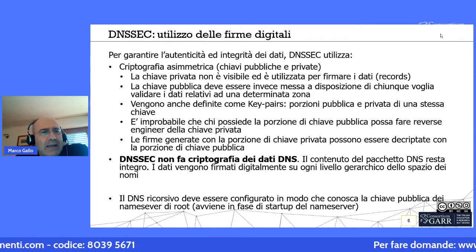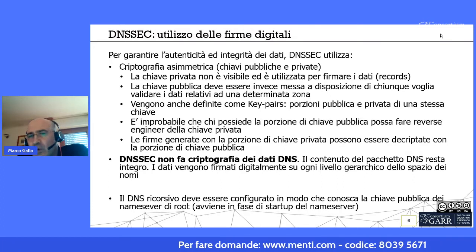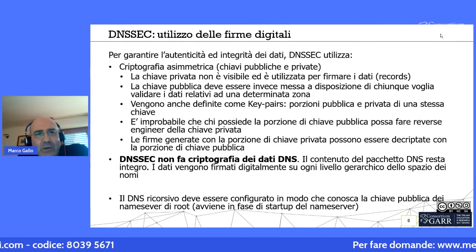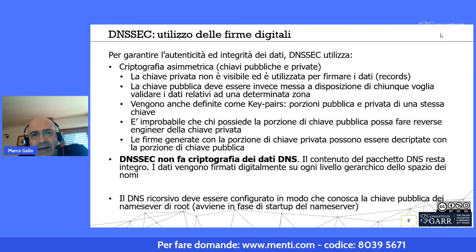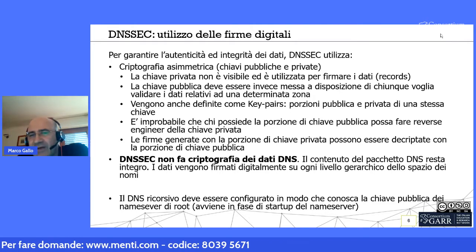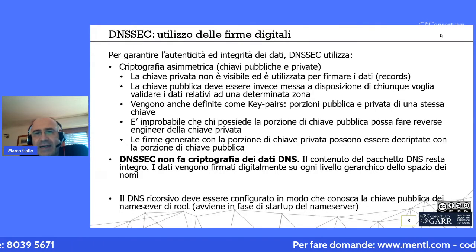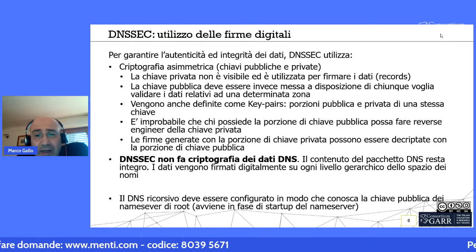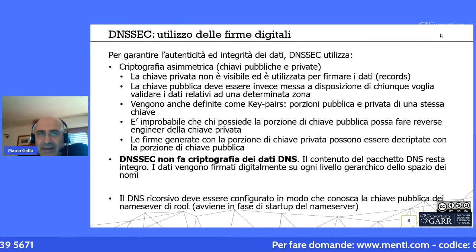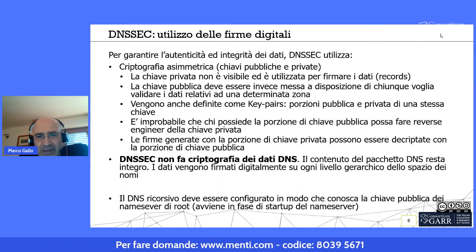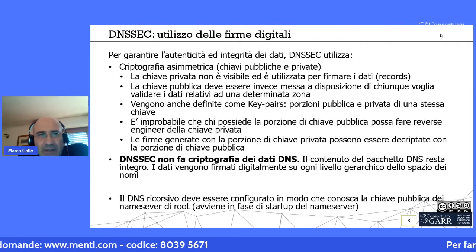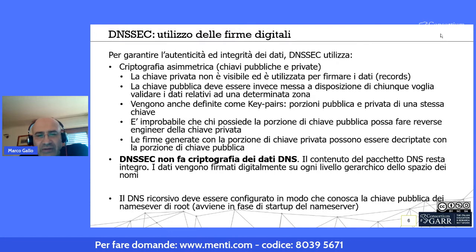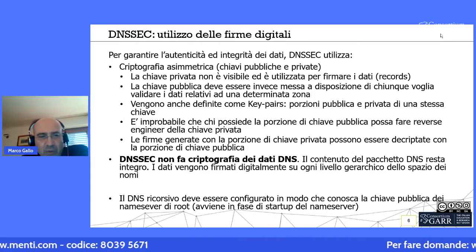Il DNSSEC utilizza l'autenticità e l'integrità dei dati attraverso la crittografia asimmetrica, usando chiavi pubbliche e private. La chiave privata viene utilizzata per firmare i vari record, mentre la chiave pubblica viene messa a disposizione per validare la firma digitale associata ad ogni resource record. Va tenuto presente che il DNSSEC non cifra i dati: i classici record A, quad-A, PTR ecc. restano integri; viene semplicemente aggiunta una firma digitale, convalidata mediante la chiave pubblica associata.